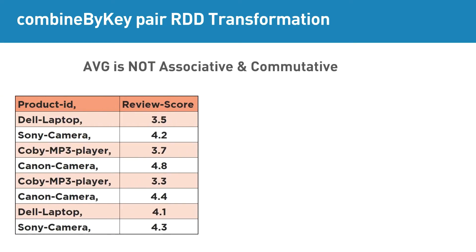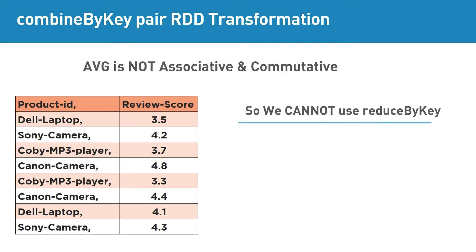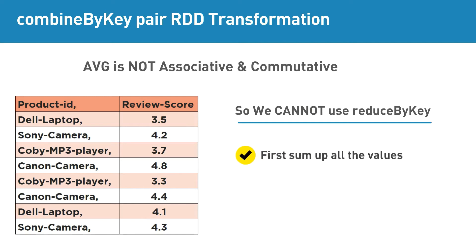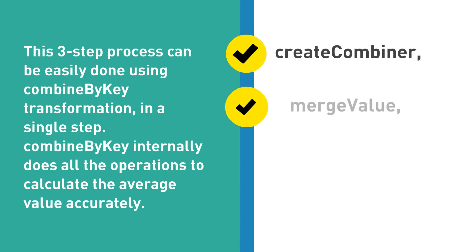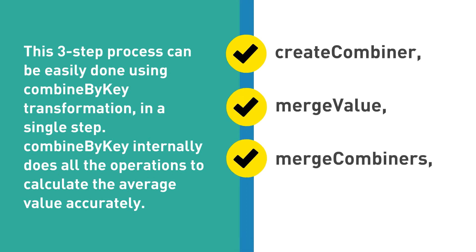Say if the input RDD contains a list of key-value elements — let's say the key is the product ID and the value is the review score. If we need to find the average score of each product, we cannot directly use operations like reduceByKey and pass a function to take the average. Instead, what we need to do is: first, sum up all the values; then find the number of values; and finally, divide the sum of values by the total number of values. This three-step process can be easily done using combineByKey transformation in a single step.